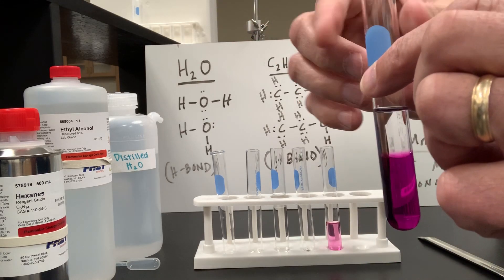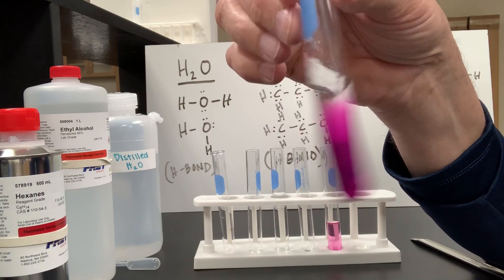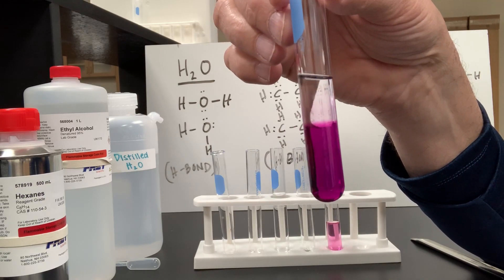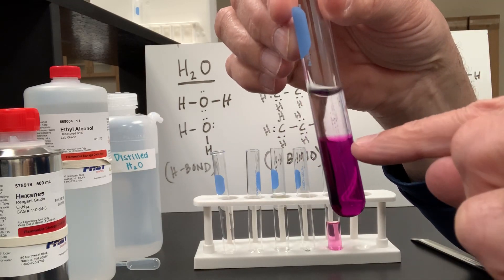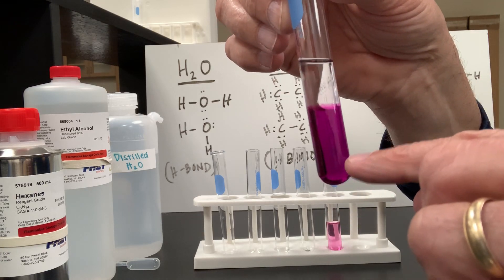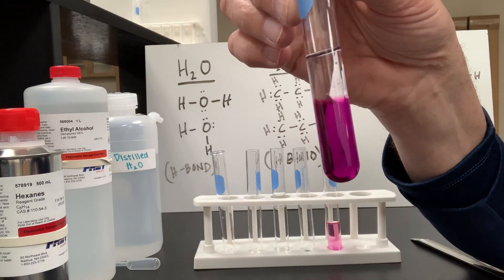Are you surprised at all by that? Or is that what you expected? Yeah, the hexane will not interact with the potassium permanganate, no matter how much I shake it. Take a look. We end up with the two layers. We have that barrier there between hexane, which is non-polar, and my potassium permanganate and water mixture.